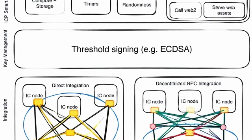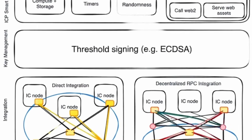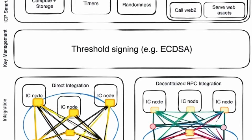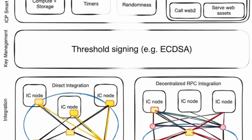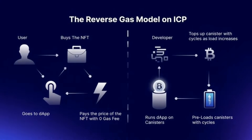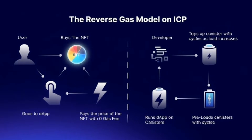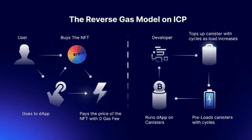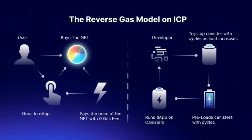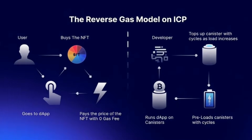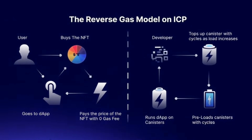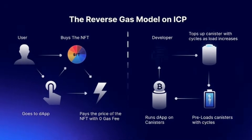This might be one of the biggest game changers for everyday users. On most blockchains, every single action you take — sending a token, liking a post, minting an NFT — requires you to pay a gas fee. Imagine if you had to pay a small fee every time you sent an email or liked a photo on social media. It would get annoying very quickly and stop a lot of people from using the service. The Internet Computer completely flips this around with its reverse gas model. On ICP, users pay zero gas fees. Instead, developers pre-load their canisters with cycles, which are the fuel for computation — like the developer paying for server costs, just like with a regular website or app. This removes 100% of the friction for the user, making it possible to create blockchain-based applications that feel just as smooth and easy to use as the web apps we use every day.